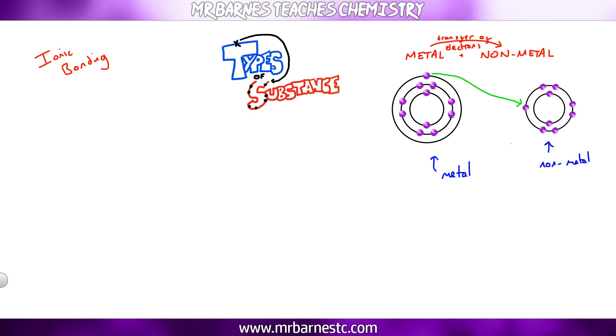What will happen in ionic bonding is the metal will give its electrons or transfer them to the non-metal, and as a result you end up with charged particles. These charged particles are called ions, which are atoms that have gained or lost electrons. Metals are always positive and non-metals are always negative.